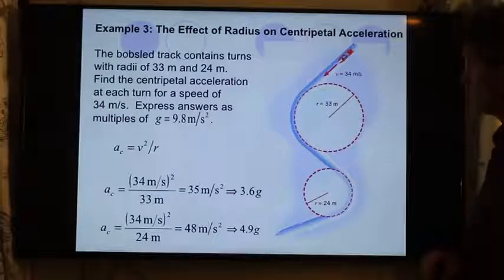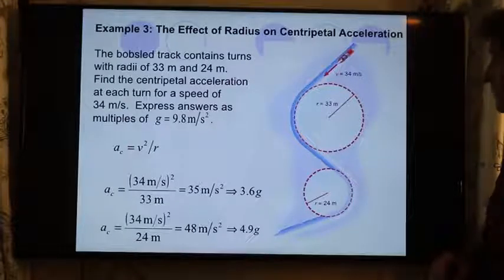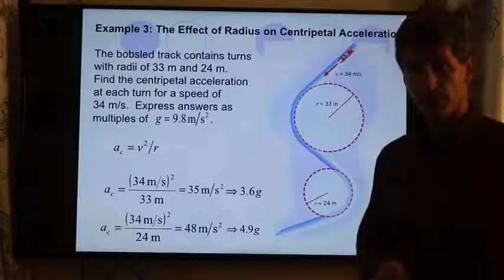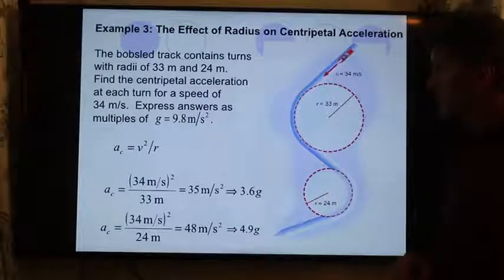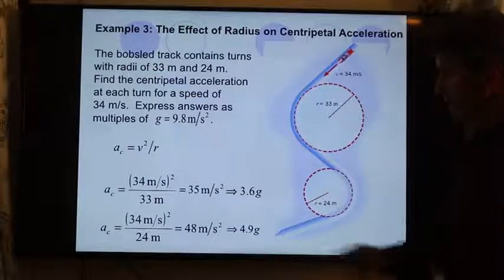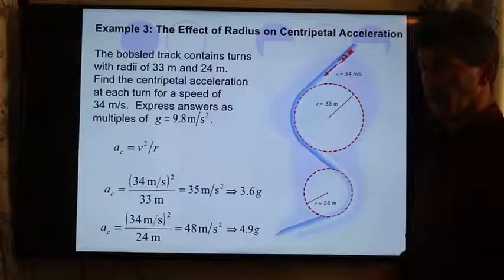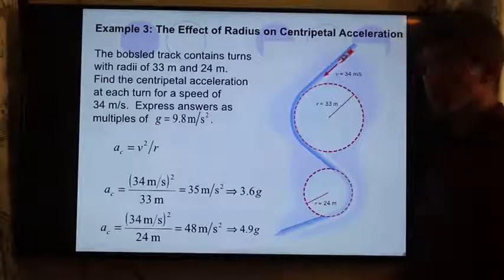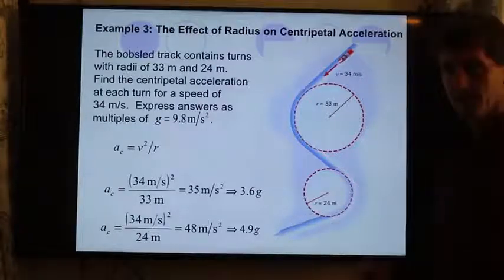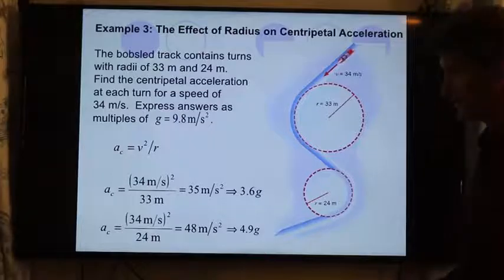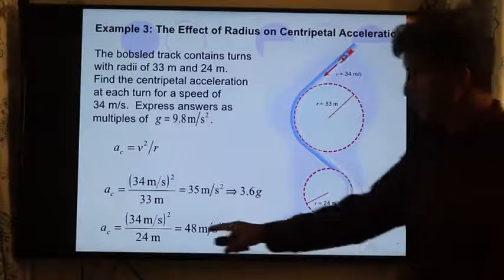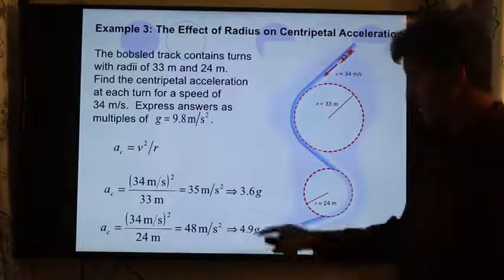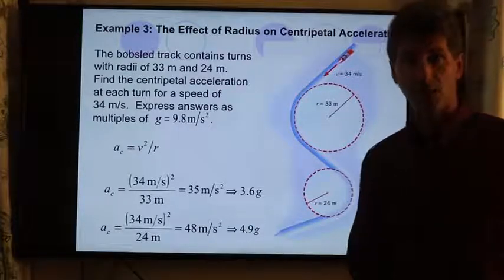Likewise, a bobsledder is traveling down a track going 34 meters per second. In the larger turn, they go around the turn of 33 meters with a radius, and they get about 35 meters per second squared, or 3.6 g's. That's pretty intense going around the turn. In the next case, the turn gets even tighter. Therefore, as r gets smaller, the acceleration gets greater, and that's about 4.9 g's.